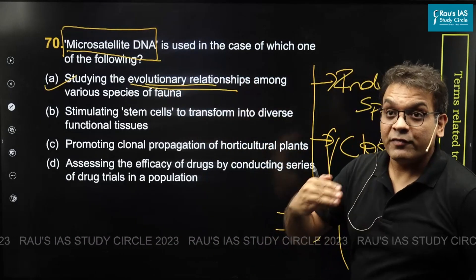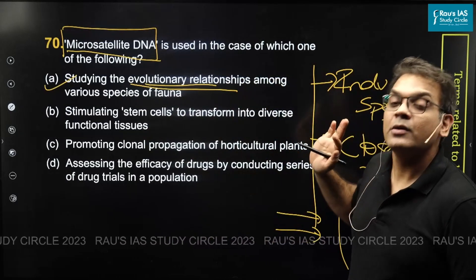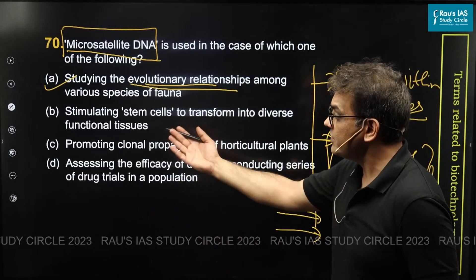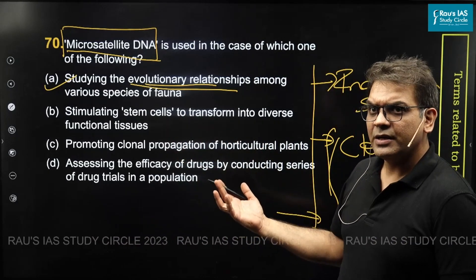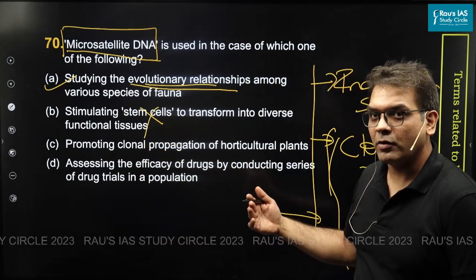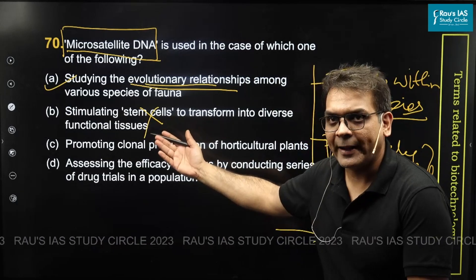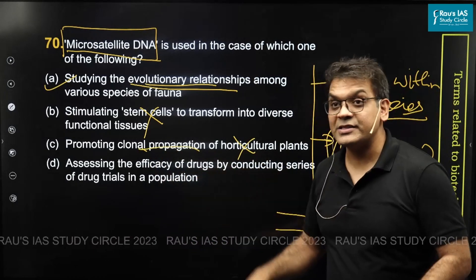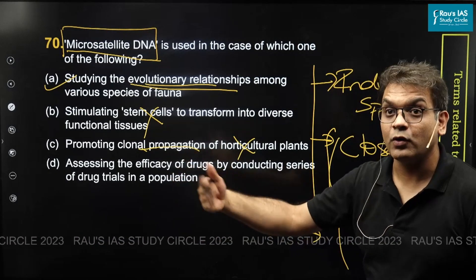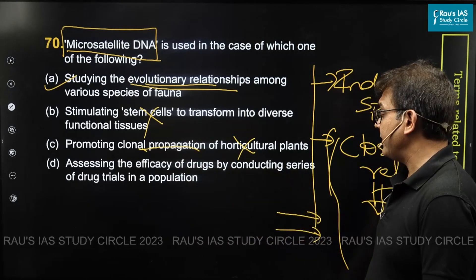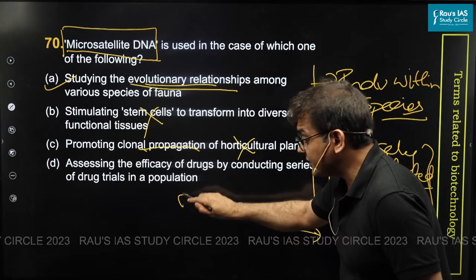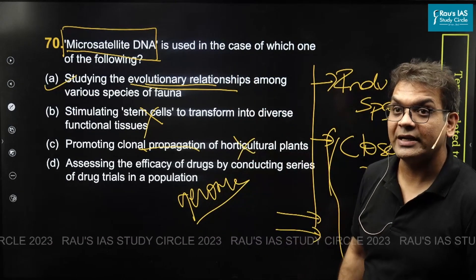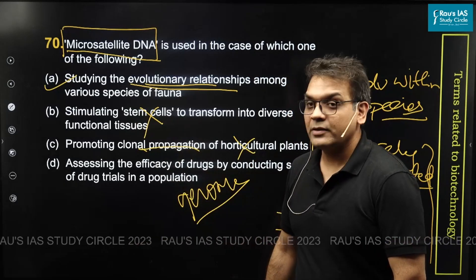If you knew that microsatellite DNA is a pattern seen in the genome, used in DNA fingerprinting, and that those patterns are seen not only in individuals within a species but also in closely related species, you'd answer this question. Option B — stimulating stem cells to transform into diverse functional tissues — is tissue engineering. Option C is clonal or vegetative propagation. Option D — assessing drug efficacy through drug trials — is not what microsatellite DNA does; you cannot achieve that by looking at sequence patterns. Therefore, A is the correct answer.